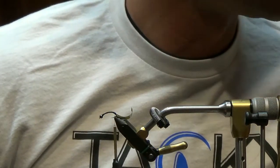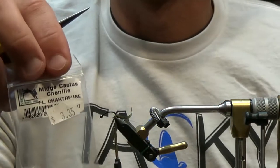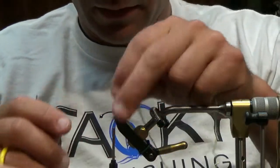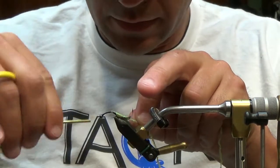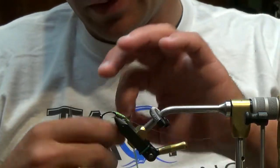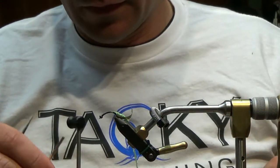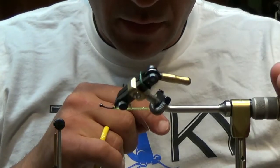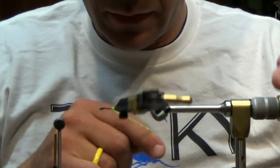The next thing we're going to take is this midge cactus chenille in fluorescent chartreuse and we're just going to tie this in. We'll get this together and we'll build our taper just slightly with our thread. Now we'll throw a half hitch in here.